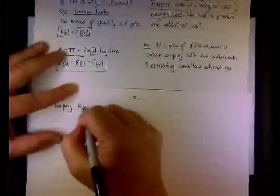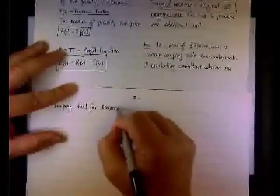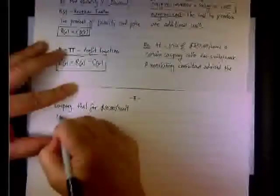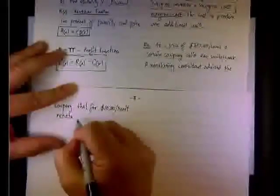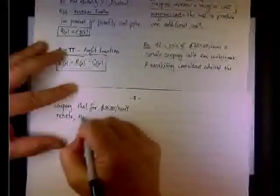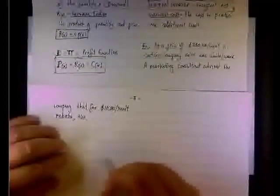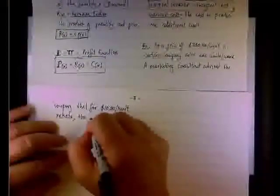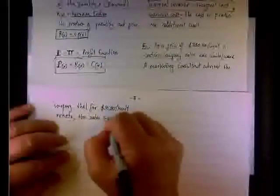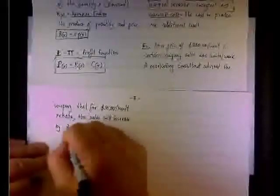That for a $10 per unit rebate or discount, the sales would increase by 20 units per week.